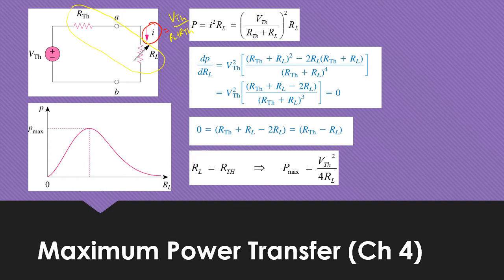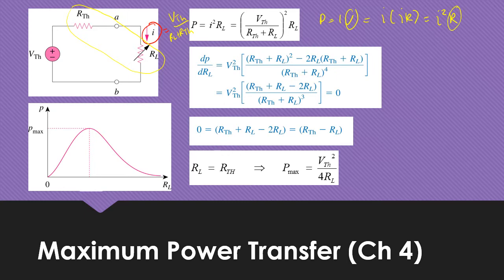Power is equal to IV. You know that power equals IV, but how do you relate that to the current and the load? Since V is equal to IR, you have I and IR, so you have I squared R, and this R is basically RL, the load resistance. That's why in this equation we have I squared RL.